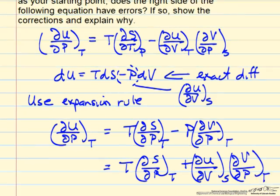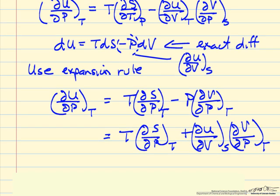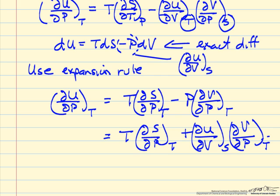Now we can compare the two sides of the equation and notice a number of errors. That should be a T, this should be an S, this should be a positive sign, and these two terms should be switched to end up with the correct equation.